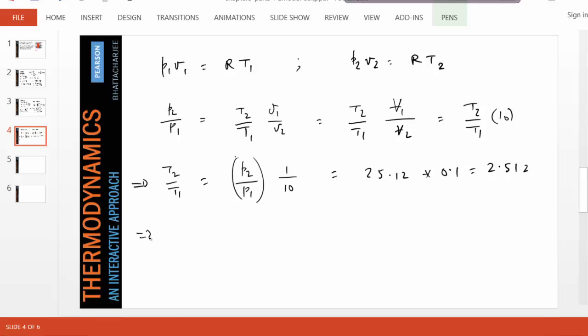So that gives us T2, 300 times 2.512, which is, you can show that this is 754 Kelvin. So we have found the final temperature.